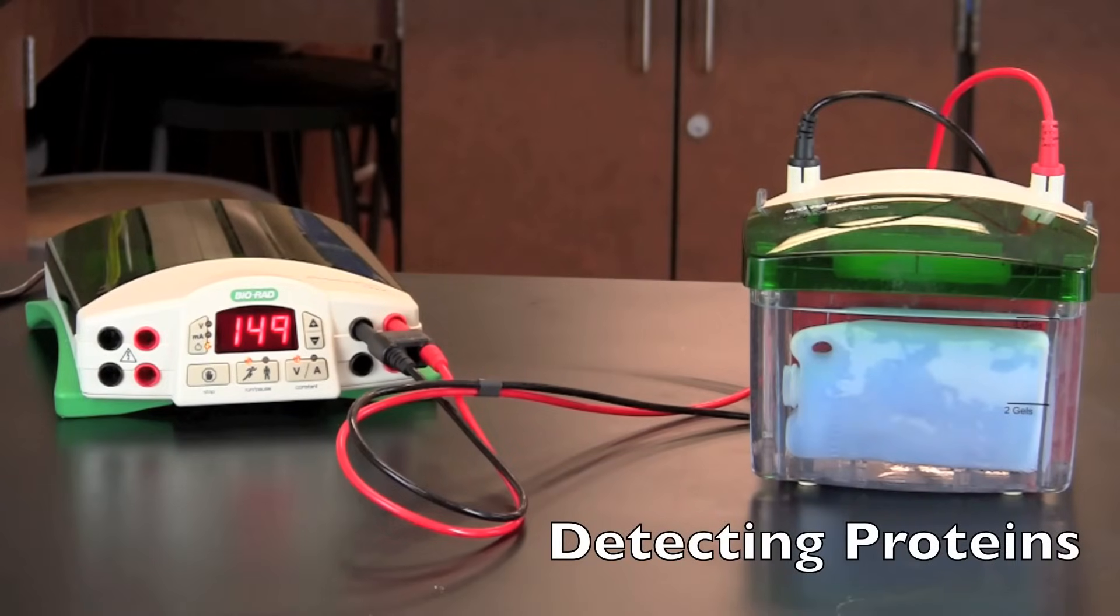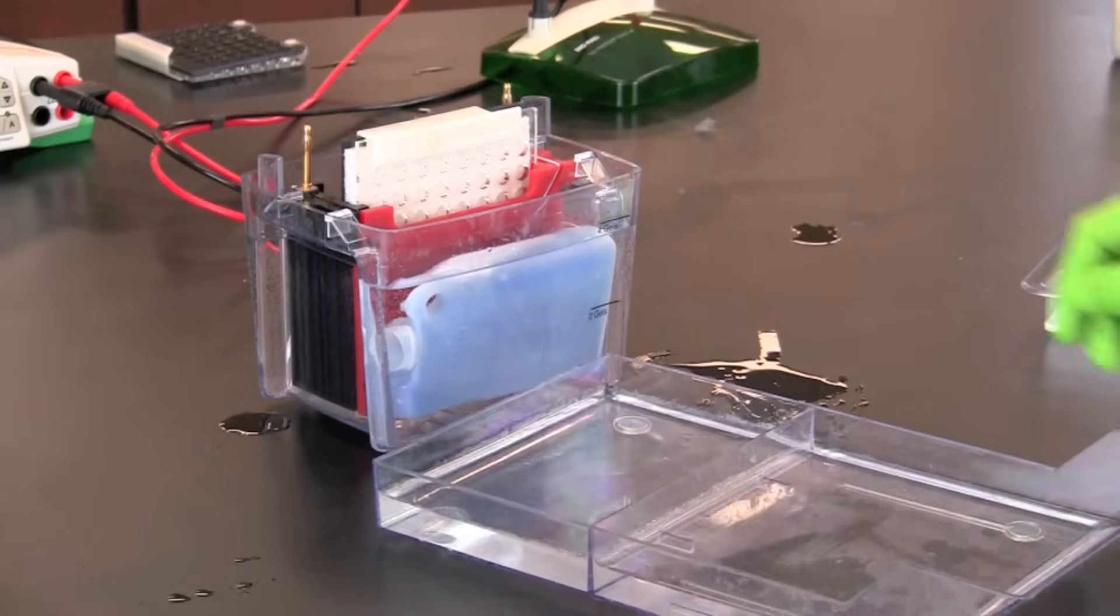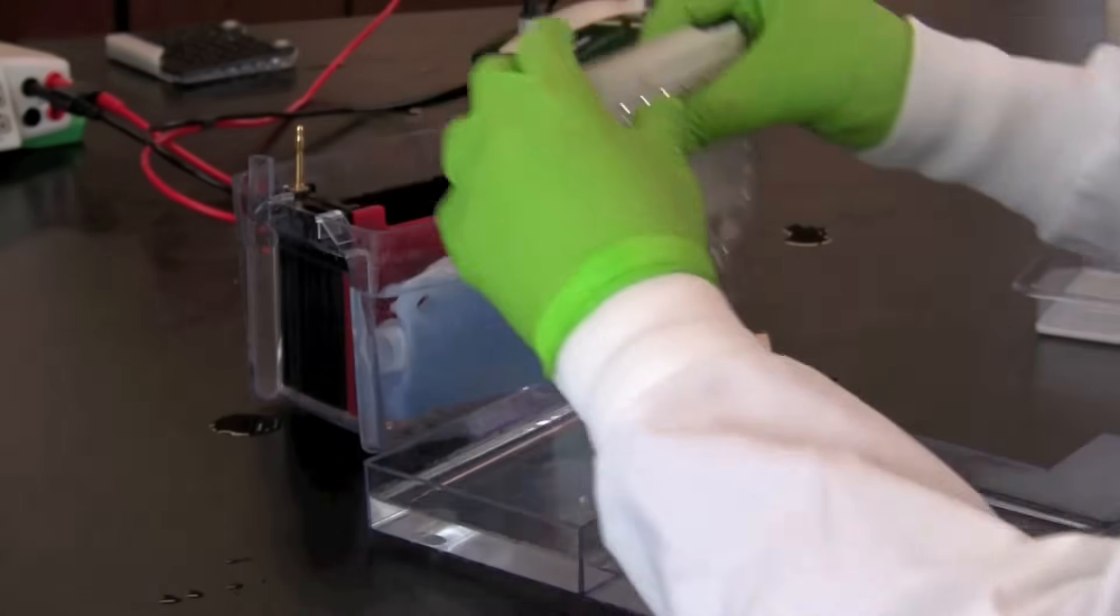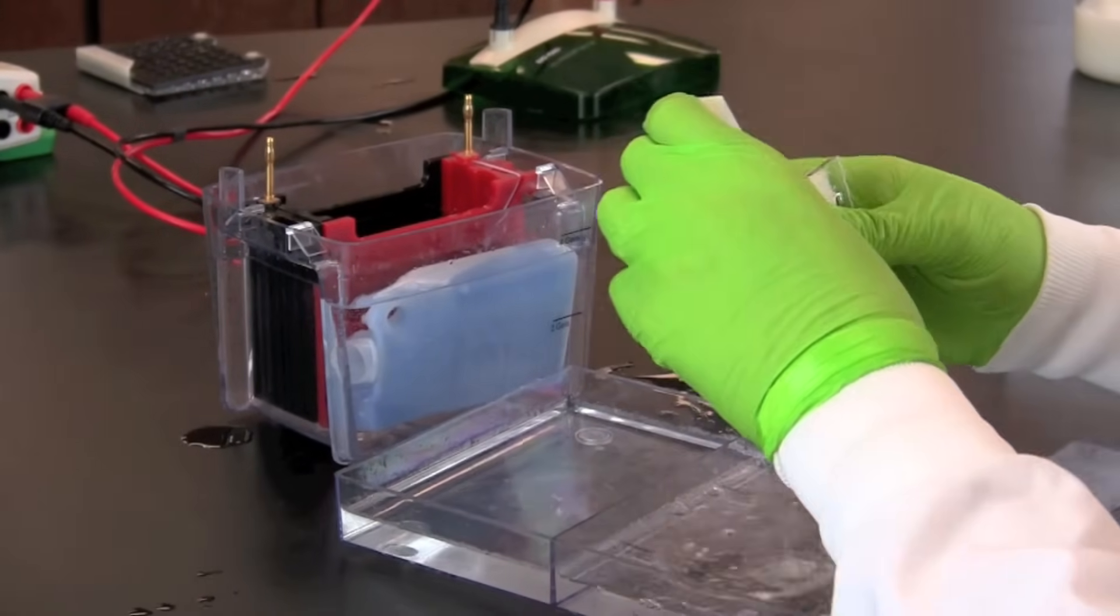When the run is complete, turn off the power supply and disassemble the electrophoresis chamber and remove the inner module. Open the module and place it in a container filled with blotting buffer with the black side down.